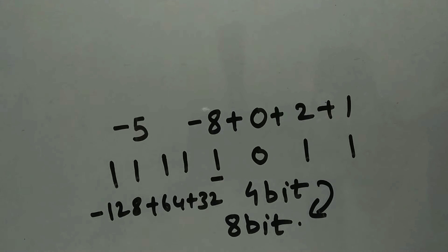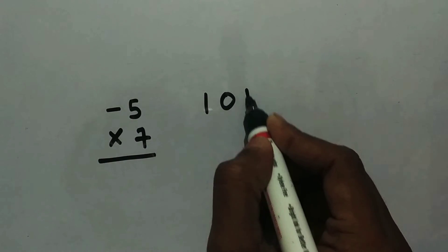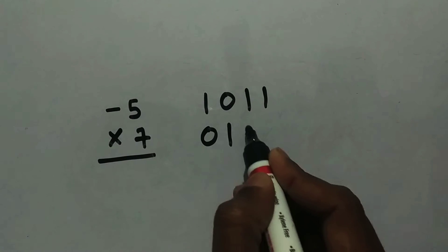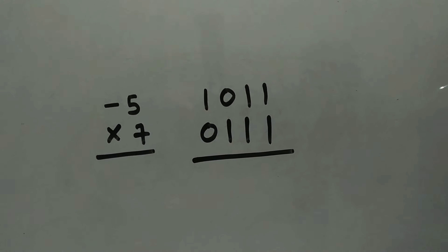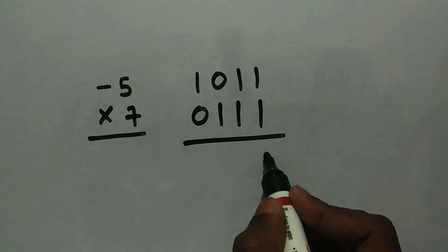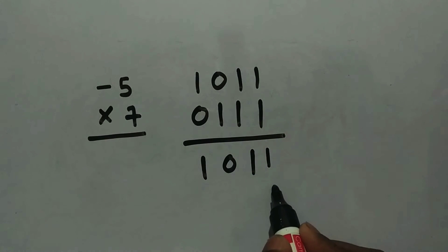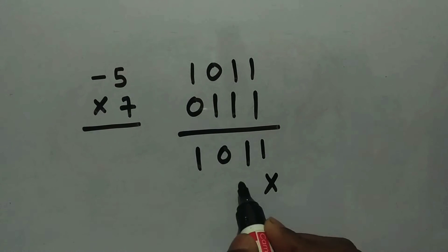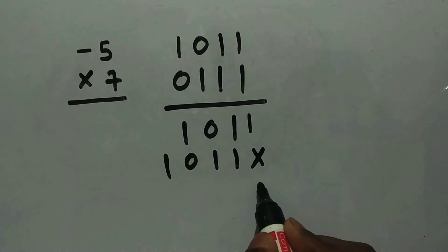Now let's go to signed binary multiplication. I'll take the example minus 5 times 7. Minus 5 in binary two's complement is 1011, and 7 is 0111. Let's multiply them — it's very similar to normal binary multiplication. So 1 times 1011 gives 1011. Next, we multiply by the 1 in the tens place — don't forget the shift marker — giving 1011 shifted one place.